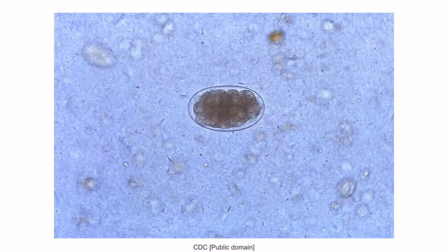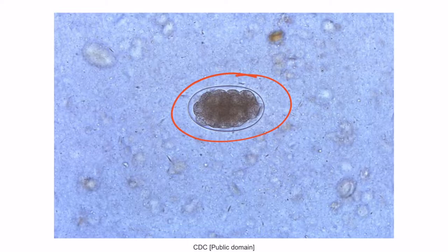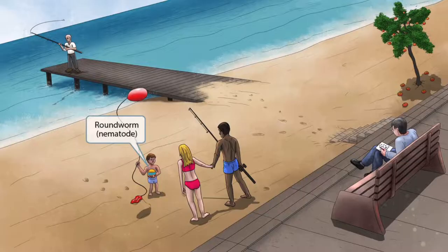This is an image of a single hookworm egg. It's most important for you to be able to generally recognize that this is an egg from a parasite. Don't get too caught up in the details of the exact structure. For Step 1, you'll rarely, if ever, be required to make a diagnosis based solely upon a photomicrograph like the one shown here.